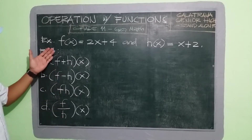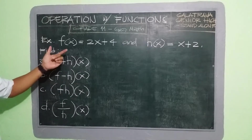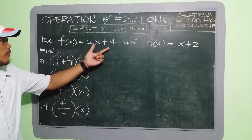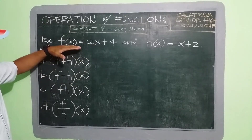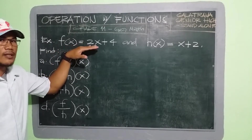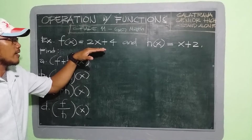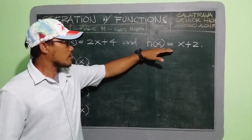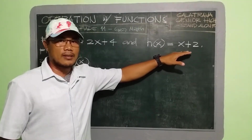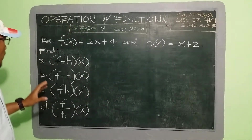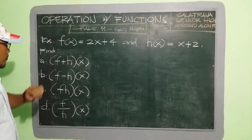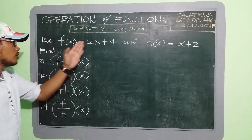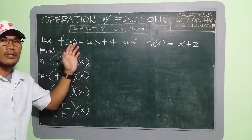Here on the board we have our example. First, we have f(x) = 2x + 4. Our second function is h(x) = x + 2. We're going to find the sum, the difference, the product, and the quotient of the two given functions.